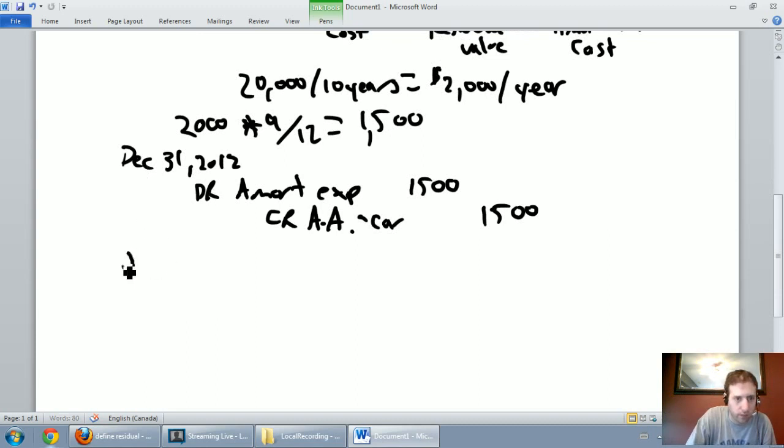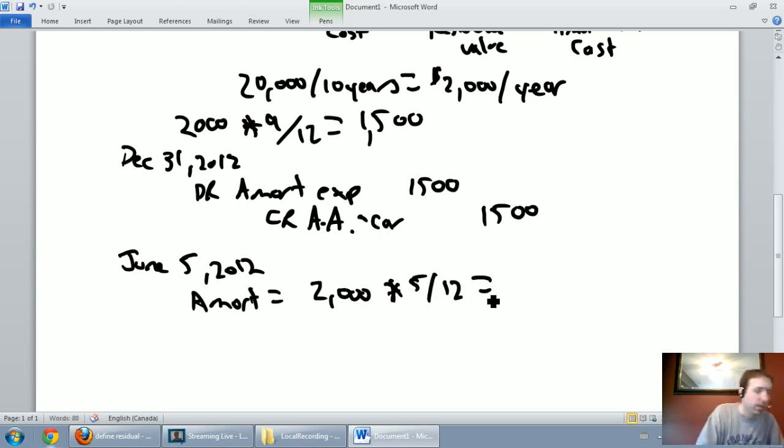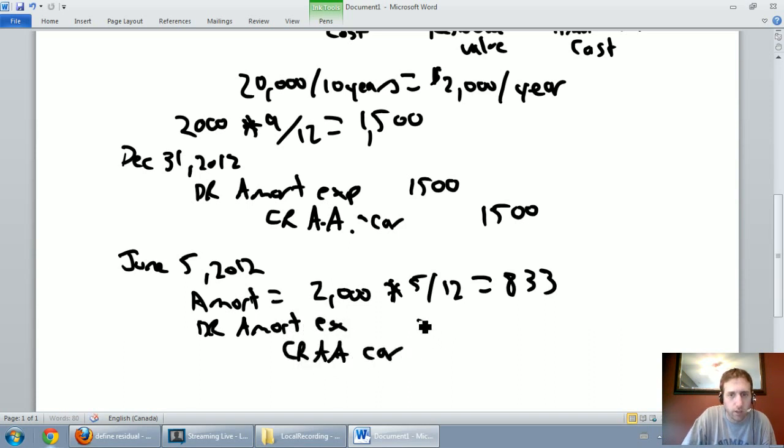On June 5th, 2013, I need to amortize this asset. My amortization here is going to be $2,000 if it was a full year, but I only got five out of twelve months. $2,000 times 5 divided by 12 is $833.33. So, let's do our amortization again. Debit amortization expense, credit accumulated amortization on the car for $833.